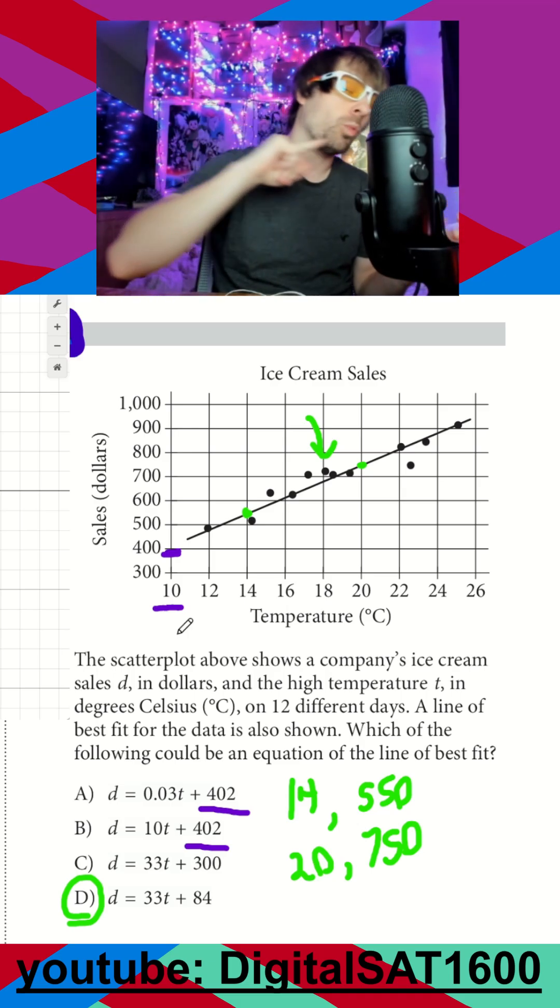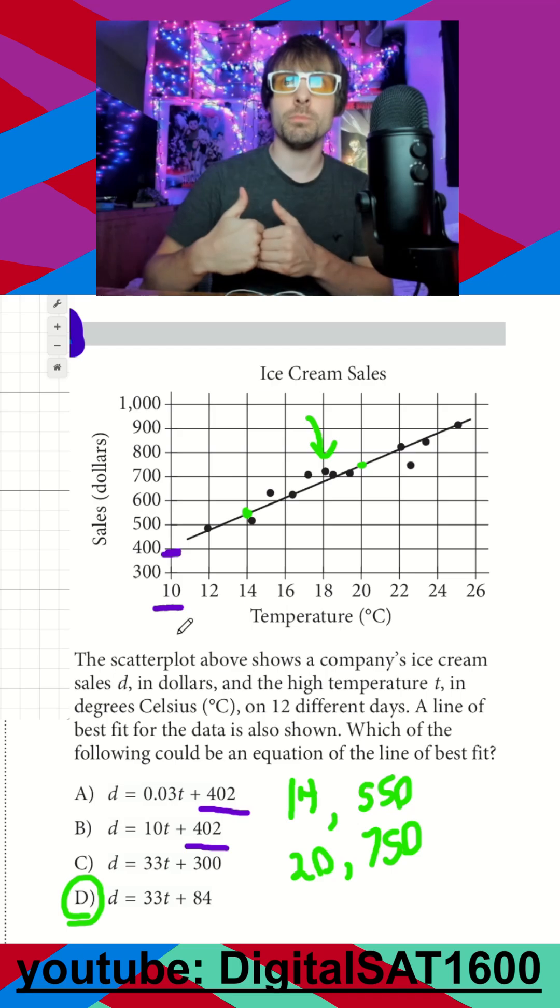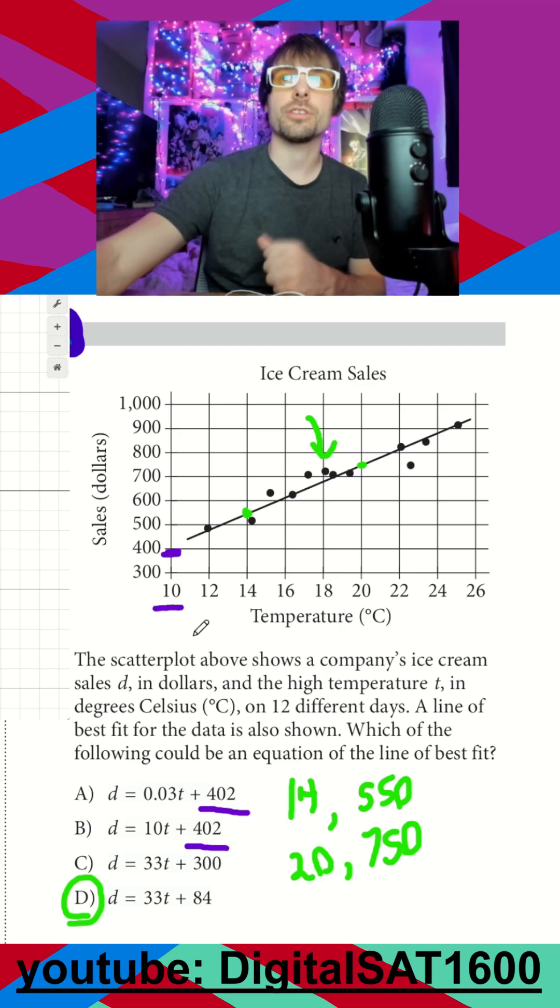So our y-intercept is actually way to the left and that's why graphing your own graph is always going to be more effective than trying to interpret theirs. It's going to be D.